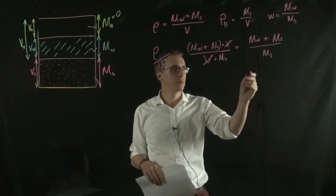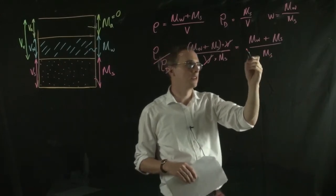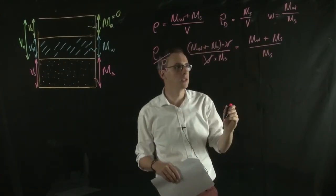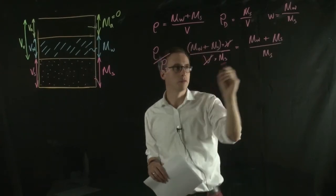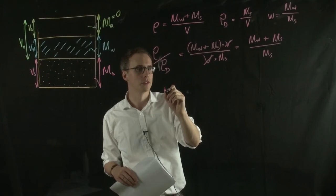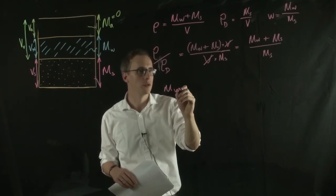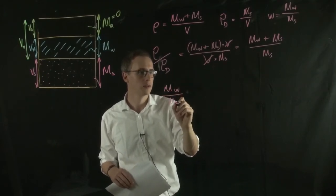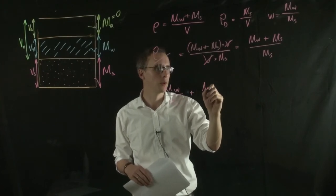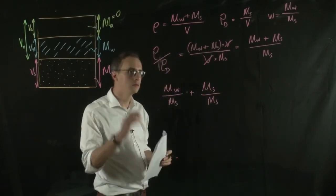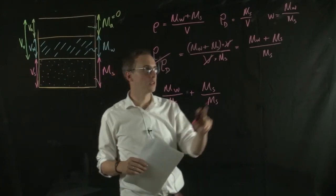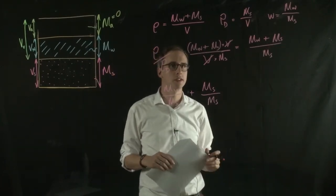Well, we can separate out the denominator here into the top part of the equation. So we can rewrite this in terms of just mw over ms, plus ms over ms. So that's really just separating out these two on the top.